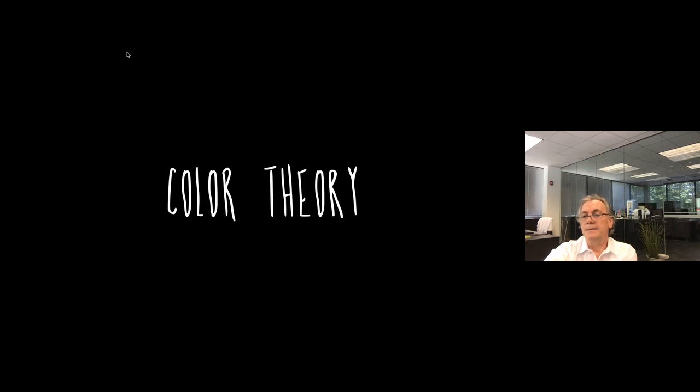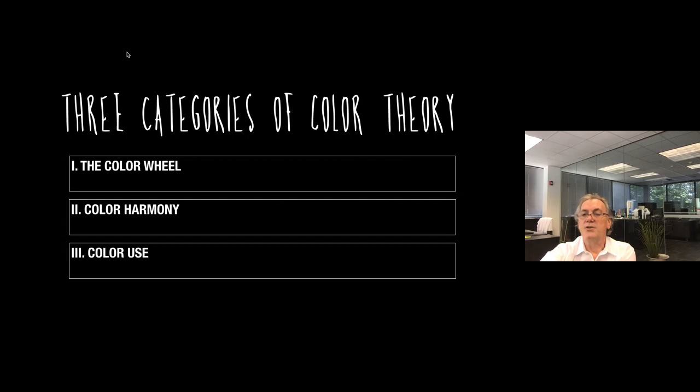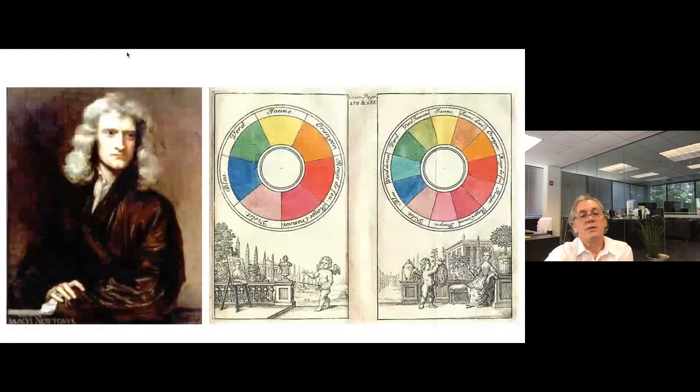Let's speak a little bit about color theory. This is another element very interesting to keep in consideration. Well, color theory is a term used to describe rules and guidelines regarding the use of color in art and design. And there are basically three categories that we do need to keep in consideration: the color wheel, the color harmony and how colors are used.